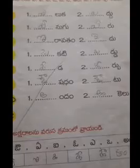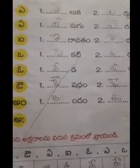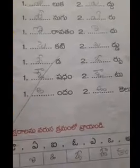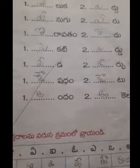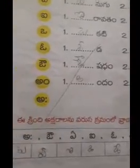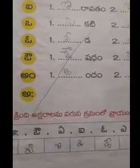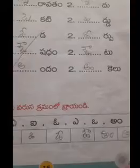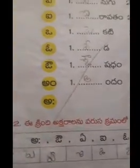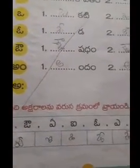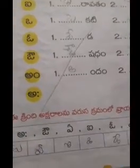Here you can see the text book in the description box. You can see the letters in the description box. Tharavata neen chephi na e nalugu pages lho unna words anni kooda me rough book lho 5 times practice cheskondu. Ok children, we will meet in the next class. Till then, bye bye.